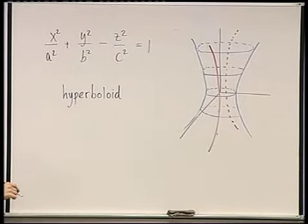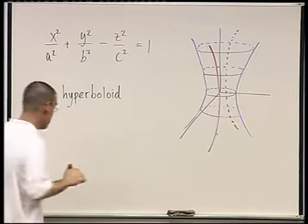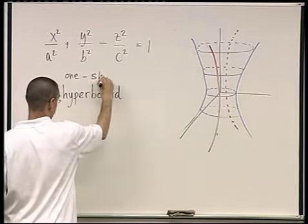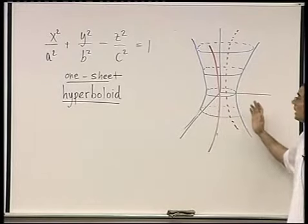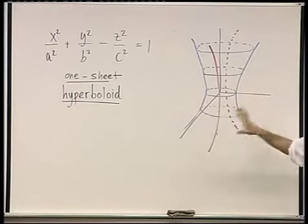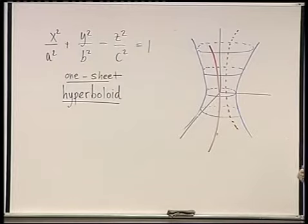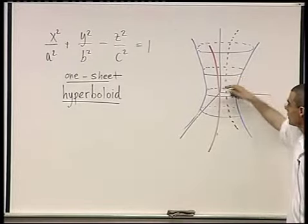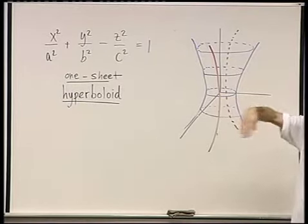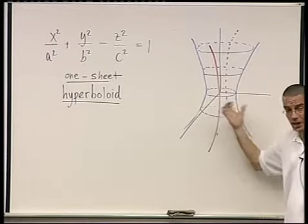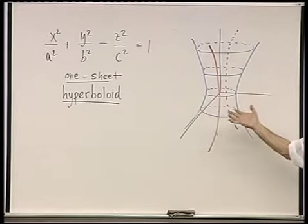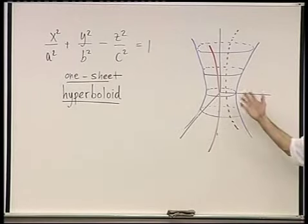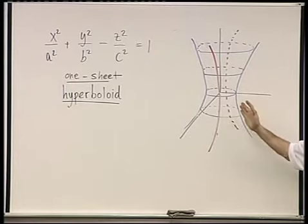There are two kinds of hyperboloids because there are two kinds of hyperbolas. This one is called a one-sheet hyperboloid, because the surface is made up of one piece. All the points satisfying this equation live on the rim — not on the inside of the chimney, but only the surface. It's not a solid object but a surface. You could take a piece of cloth and make yourself a one-sheet hyperboloid.